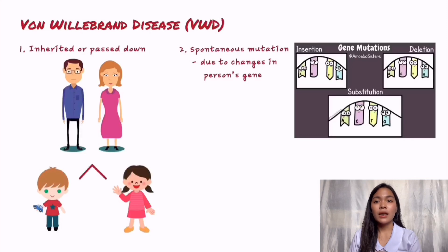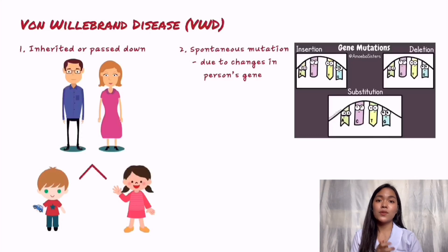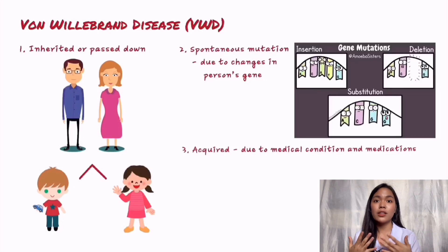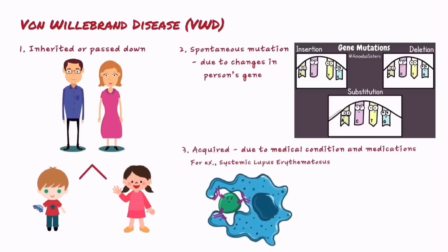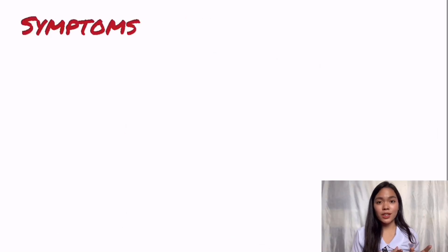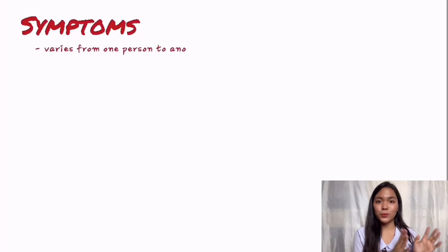It is also possible for a person to acquire von Willebrand disease later in life because of an underlying medical condition or use of a medication. The specific symptoms and severity of von Willebrand disease can vary greatly from one person to another.